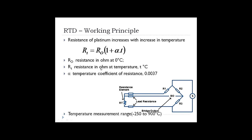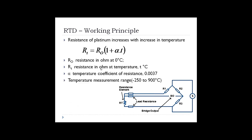The RTD can be used to measure temperature ranging from minus 250 degrees Celsius to 900 degrees Celsius. This explains how RTD works as a resistive transducer.